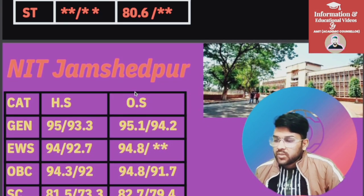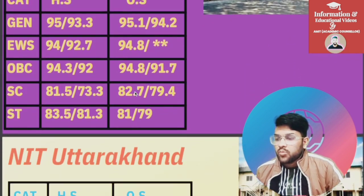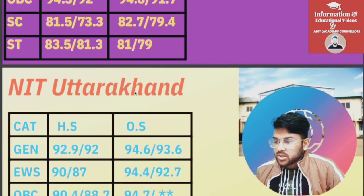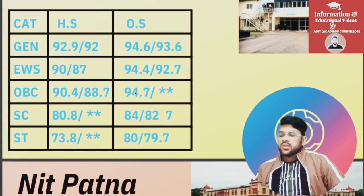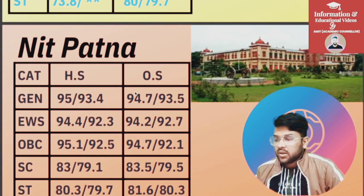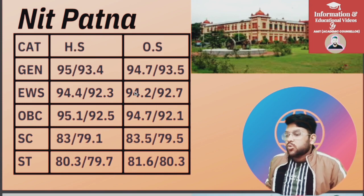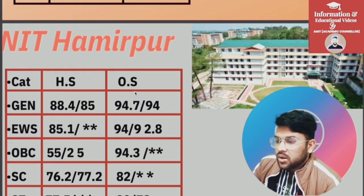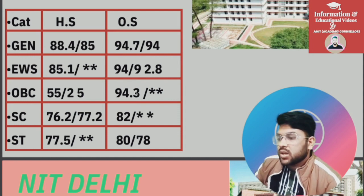For NIT Jamshedpur: General 95.1, EWS 94.8, OBC 94.8, SC 82.7, ST 81. For NIT Uttarakhand: General 94.6, EWS 94.4, OBC 94.4, SC 94.7, ST 84, PD 80. For NIT Patna: General 94.7, EWS 94.2, OBC 94.7, SC 83.5, ST 81.6. For NIT Hamirpur: General 94.7, EWS 94, OBC 94.3, SC 82, ST 80 percentile.